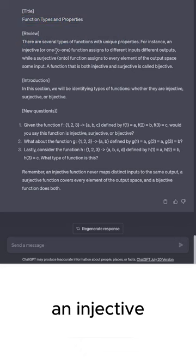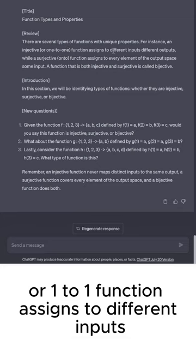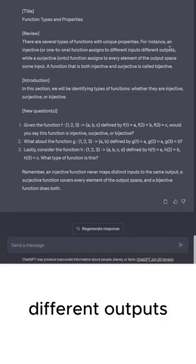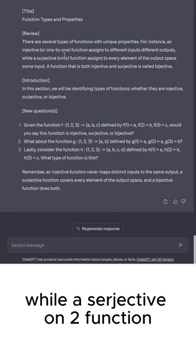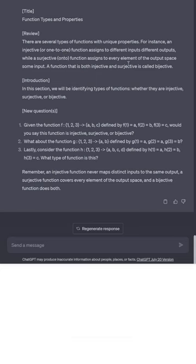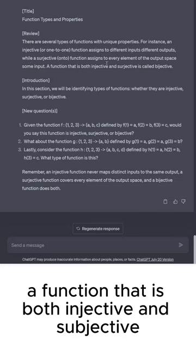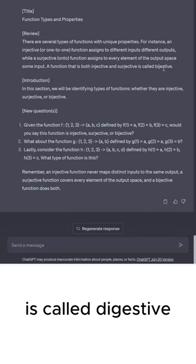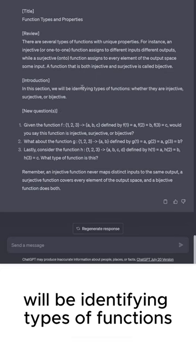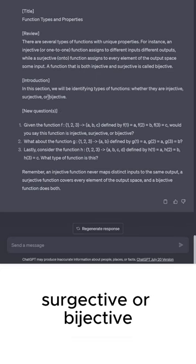For instance, an injective or one-to-one function assigns to different inputs different outputs, while a surjective onto function assigns to every element of the output space some input. A function that is both injective and surjective is called bijective. In this section, we'll be identifying types of functions, whether they are injective, surjective, or bijective.